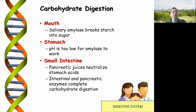A little bit about the digestion of carbohydrates. Remember carbohydrates contain carbon, hydrogen and oxygen. In the mouth, we have an enzyme called amylase which breaks starch into sugar, being glucose. In the stomach, amylase doesn't work because of the pH. In the small intestine, we have neutralizing acids and various other processes.